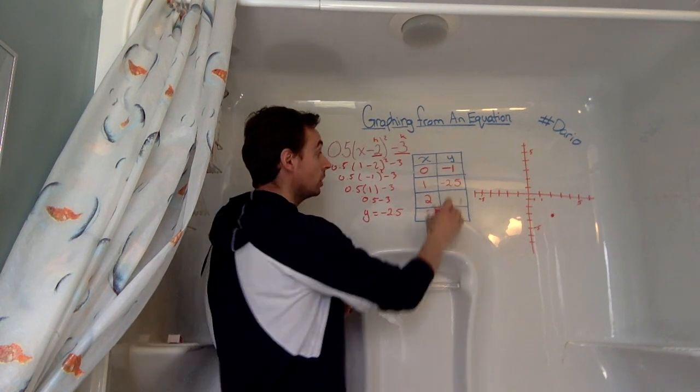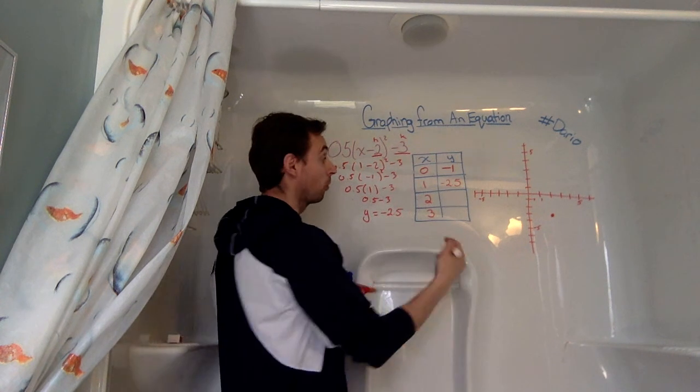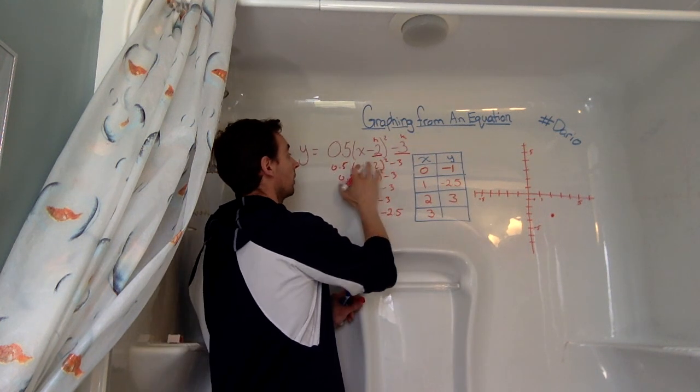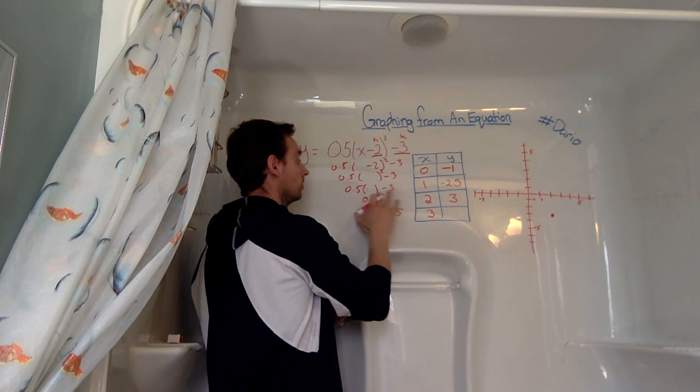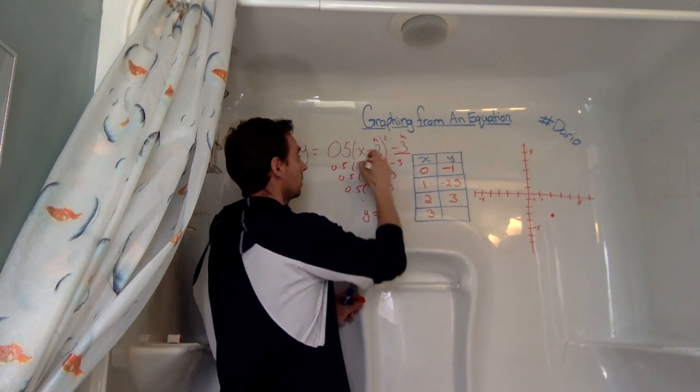Now we should know what this one is, because that's going to be our vertex. But we're going to double check just to be sure. So I'm going to erase my x values, anything that I used, and I'm going to replace it with 2 this time.